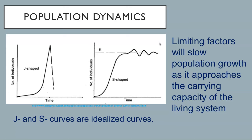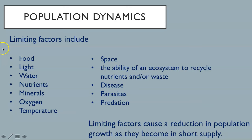Limiting factors include food, light, water, nutrients, minerals, oxygen, temperature, space, the ability of an ecosystem to recycle nutrients and waste, disease, parasites, and predation. These limiting factors cause a reduction in population growth as they become scarce or unavailable to a population.